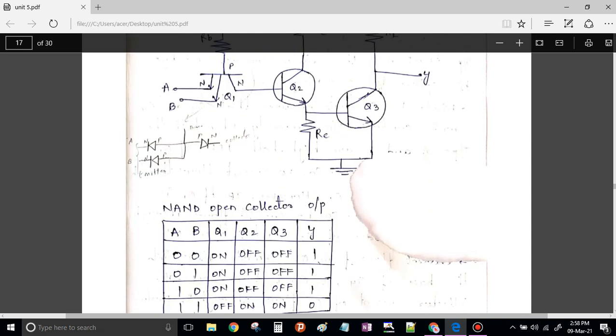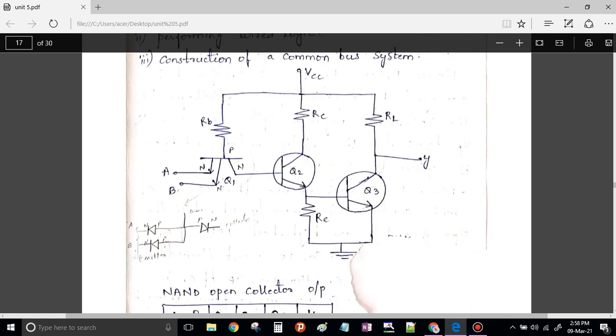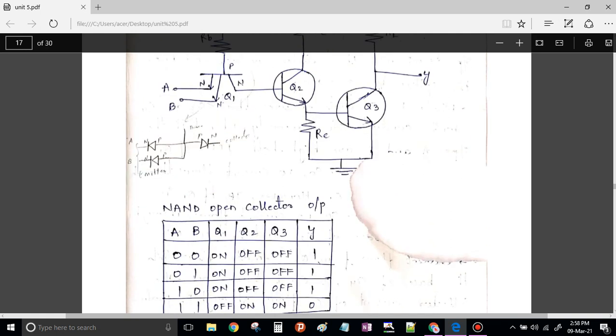Now let us say both the inputs are 0-0. When both inputs A and B are 0-0, that means my Q1 is on. When Q1 is on, obviously Q2 will be off. When Q2 is off, no sufficient voltage is available at the base of Q3. Therefore Q3 is off. When Q3 is off, it is open circuit. So what will my output be? Output will be connecting to VCC. This VCC will appear at the output. Therefore it is 1.